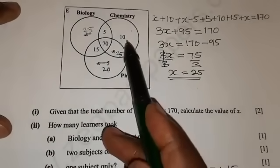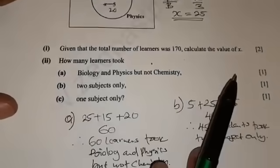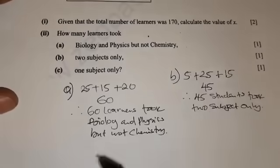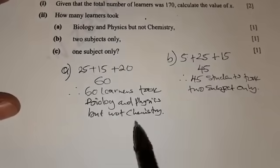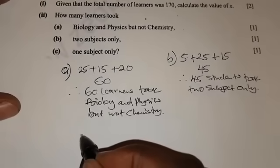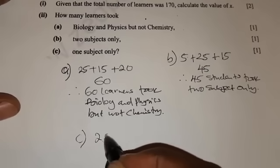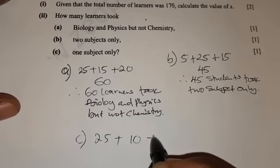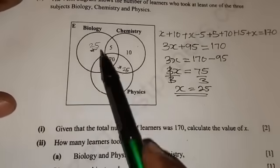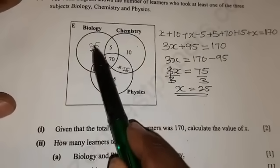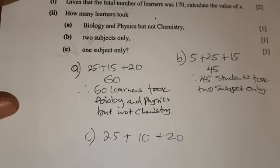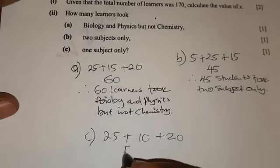So 25 plus 10 plus 20. These that are outside the intersection. 25 plus 10 plus 20, and this gives 55.